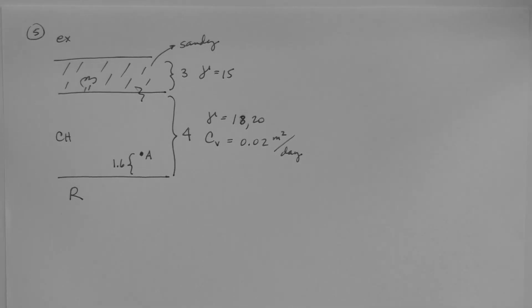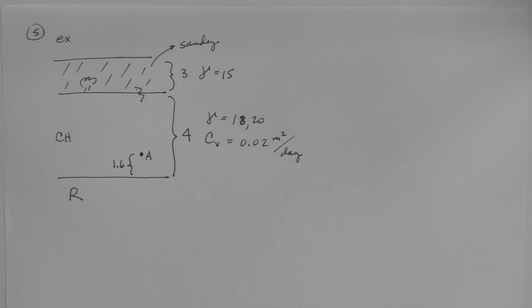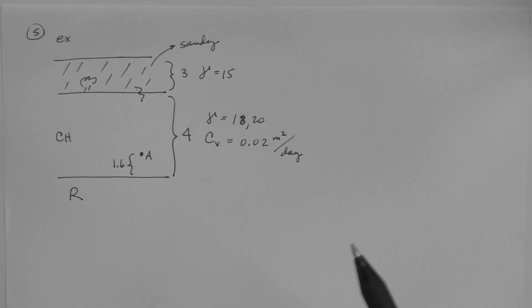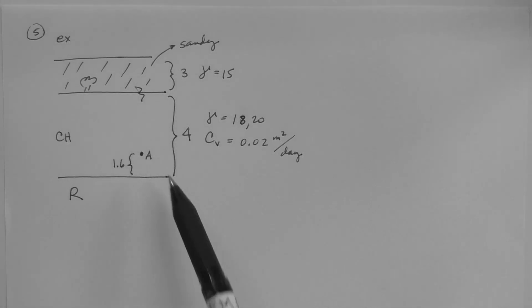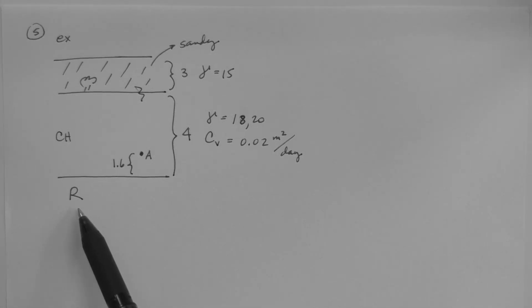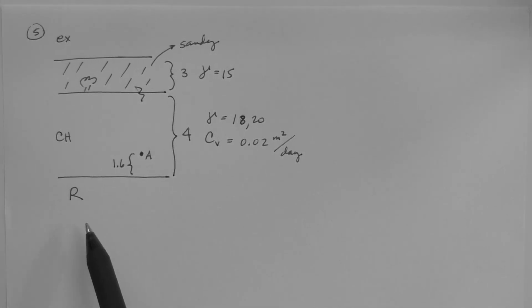Here is another time rate of consolidation example. It is the same profile as the one described in the previous example, except for one thing: the clay layer rests on rock in this case, instead of on sand.